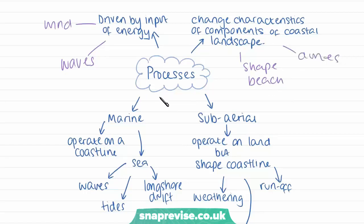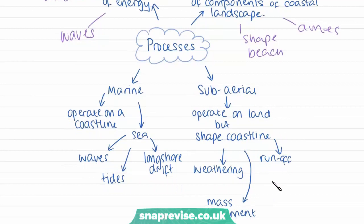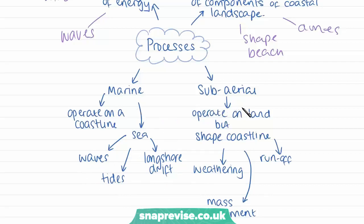These processes can either come from the water — called marine processes — or what are called sub-aerial processes. Sub-aerial processes operate on the land but shape the coastline, such as weathering, runoff, and mass movement. Marine processes operate on the coastline via the sea through things like waves, tides, and longshore drift. We're going to look at both marine and sub-aerial processes within this video.